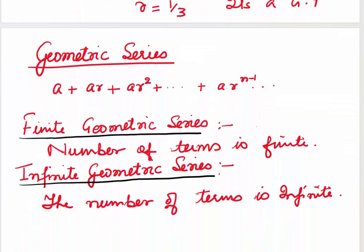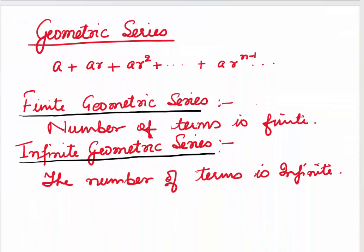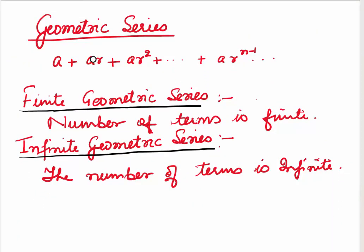Now, what is a geometric series? If we add all the terms of the progression, we get a geometric series. If the number of terms is finite, it's called a finite geometric series. If the number of terms are infinite, it's called an infinite geometric series.